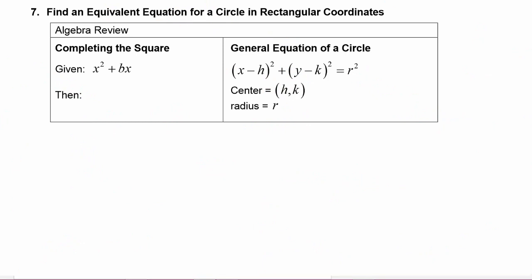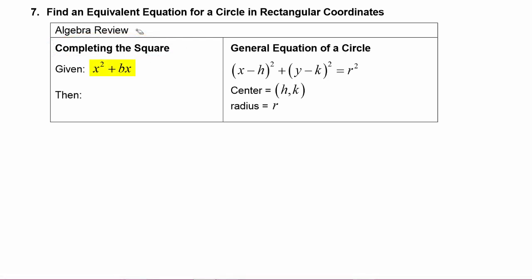Let's start off with a little algebra review. You learned how to do a process called completing the square. If you were given a quadratic in the form of x squared plus bx, you could complete the square by adding a number to that. The way you find that number is you take one half of b, which is the coefficient of x, and then square it — that would be what you add in to complete the square.